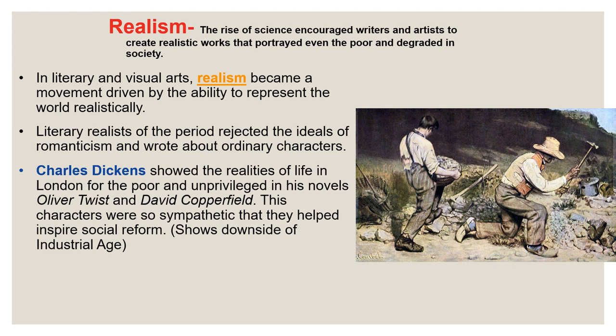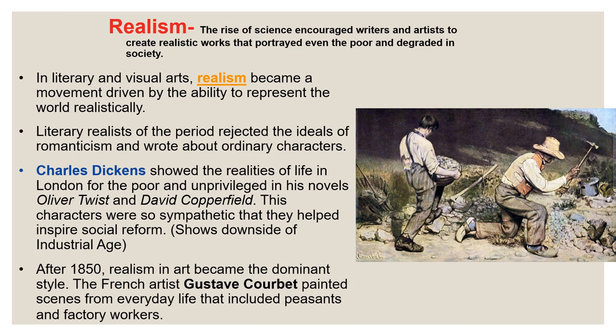Many people were so drawn to Dickens's characters and the suffering they endured at the hands of industrial society that many started to push for the government to make changes to better the lives of the working class poor. This was really only possible in England, which had already adopted a lot of evolutionary liberalism. After about 1850, realism in art became the dominant style, replacing the Romantics in the last half of the 19th century. The French artist Gustave Courbet painted scenes from everyday life that included peasants and factory workers — his painting The Rock Breakers shows regular peasant people doing manual labor daily, just as they are.